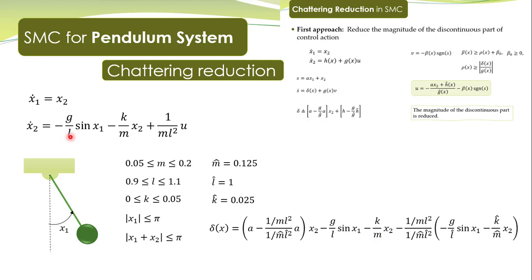H is written as: (minus g over g-hat) multiplied by h-hat, where h-hat is the nominal value of this expression. Note that this 'g' is the gravitational constant, while the other 'g' is the term multiplied with input u. Do not confuse the two. We need an upper bound on delta of x.